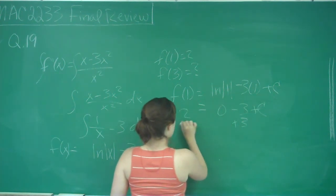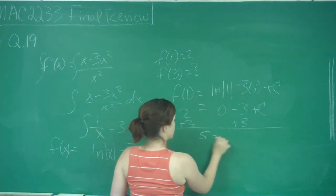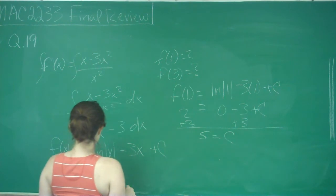We add 3 to both sides and get that c = 5. With that knowledge, we can find out what f(3) is.